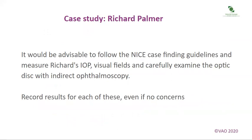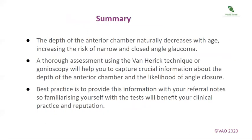It would be advisable to follow the NICE case-finding guidelines and measure Richard's IOP, his visual fields, and carefully examine the optic disc with indirect ophthalmoscopy. You should record your results for each of these, even if you have no concerns. In summary, the depth of the anterior chamber naturally decreases with age, increasing the risk of narrow and closed-angle glaucoma. A thorough assessment using the Van Herrick technique or gonioscopy will help you to capture crucial information about the depth of the anterior chamber and the likelihood of angle closure. Best practice is to provide this information with your referral notes, so familiarising yourself with the tests will benefit your clinical practice and reputation.